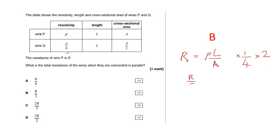So basically, the resistance of Q is R over two. It's a half. Because it's a quarter times two, it's a half.